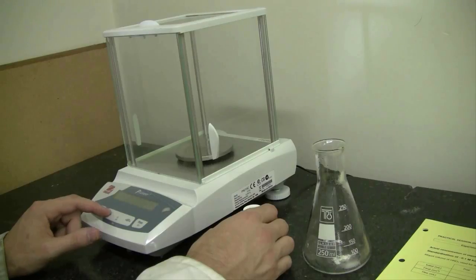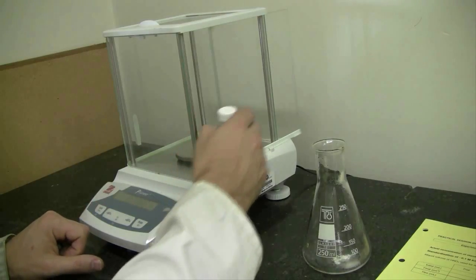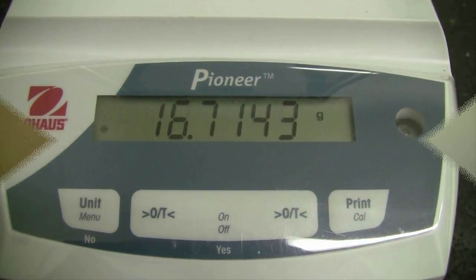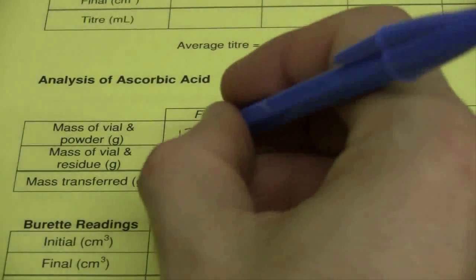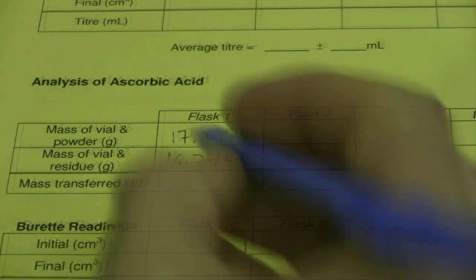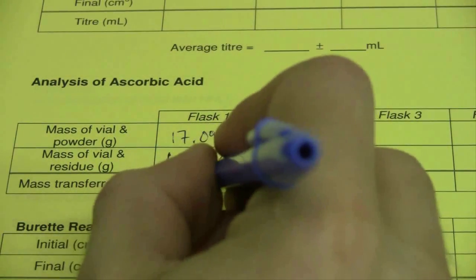Zero the balance with the doors shut, place your sample back in the analytical balance, and record another mass to four decimal places. You can record that directly on your result sheet and then determine the exact mass that you've transferred to your conical flask by calculating the difference between these two masses.